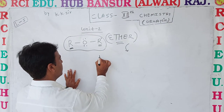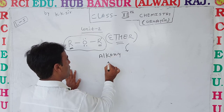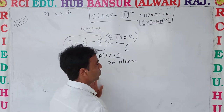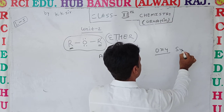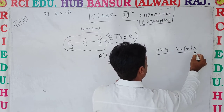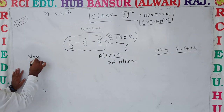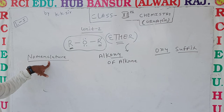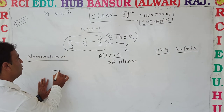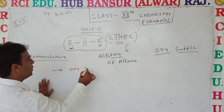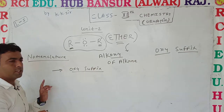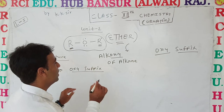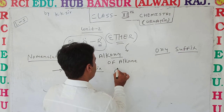For nomenclature, the IUPAC rule is called alkoxy of alkane. We use an 'oxy' suffix for naming ethers. The oxy suffix is added to the smaller alkyl group to form the alkoxy prefix.